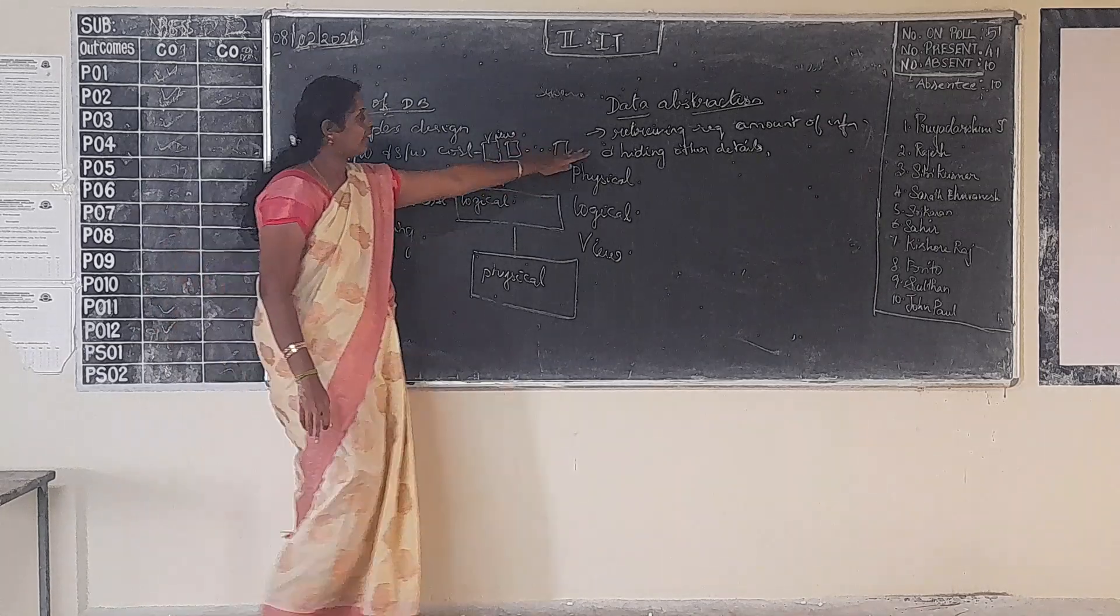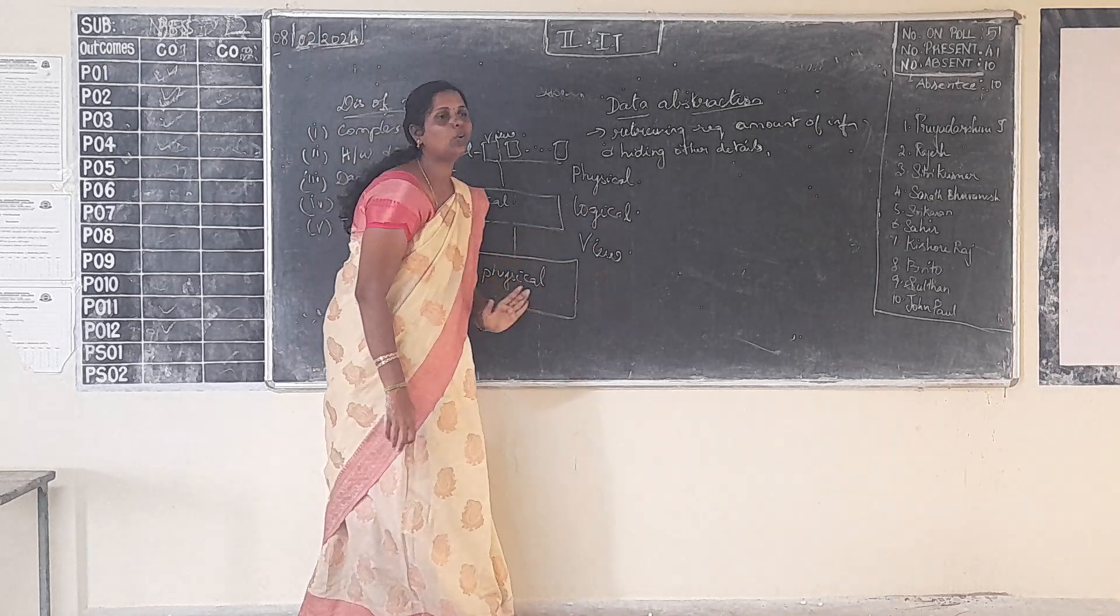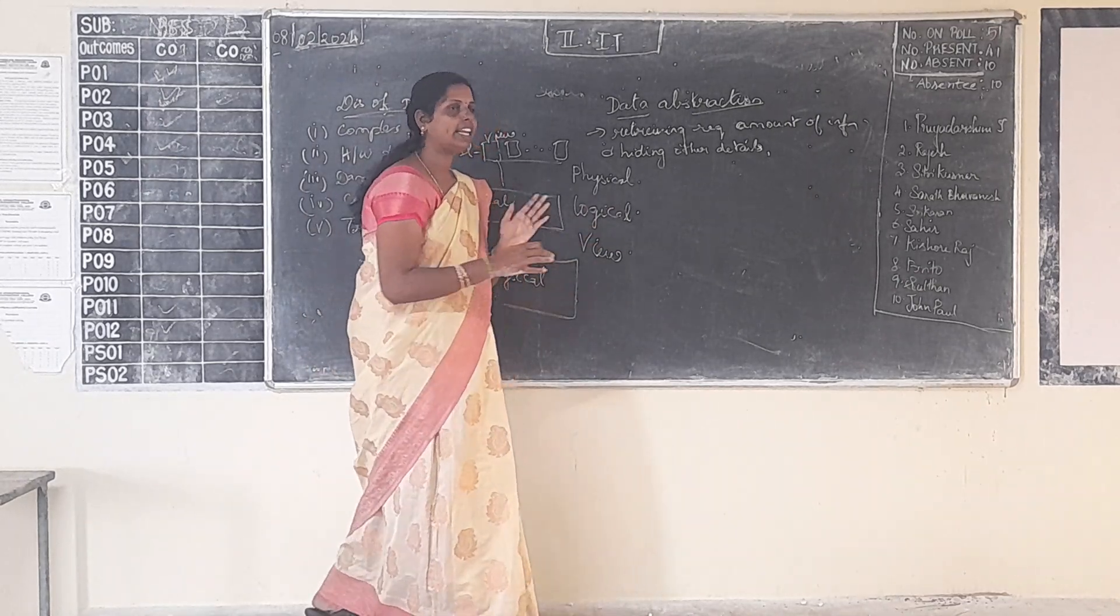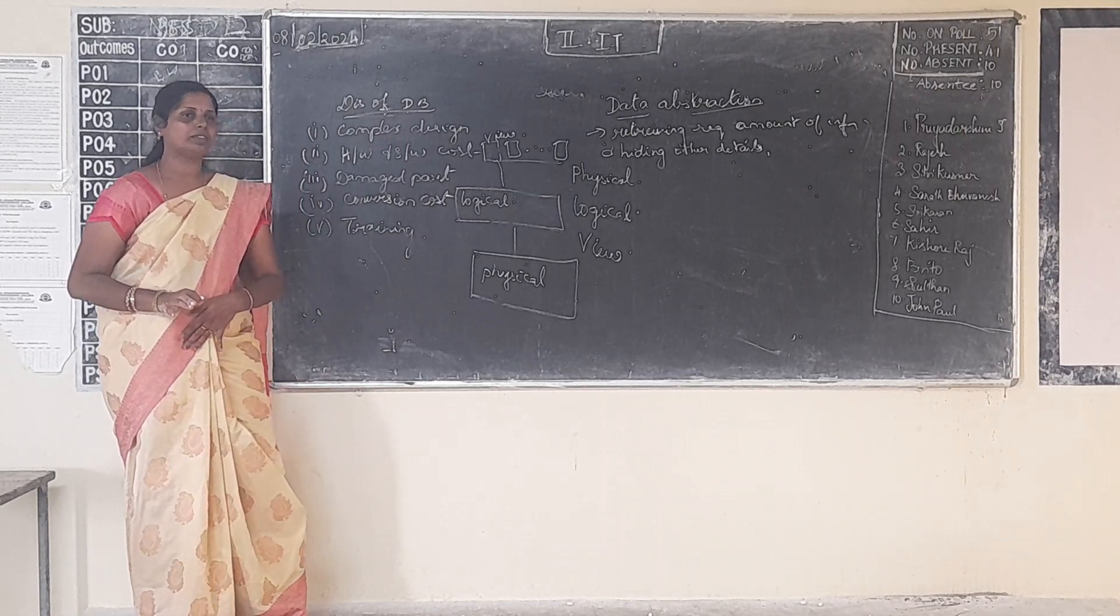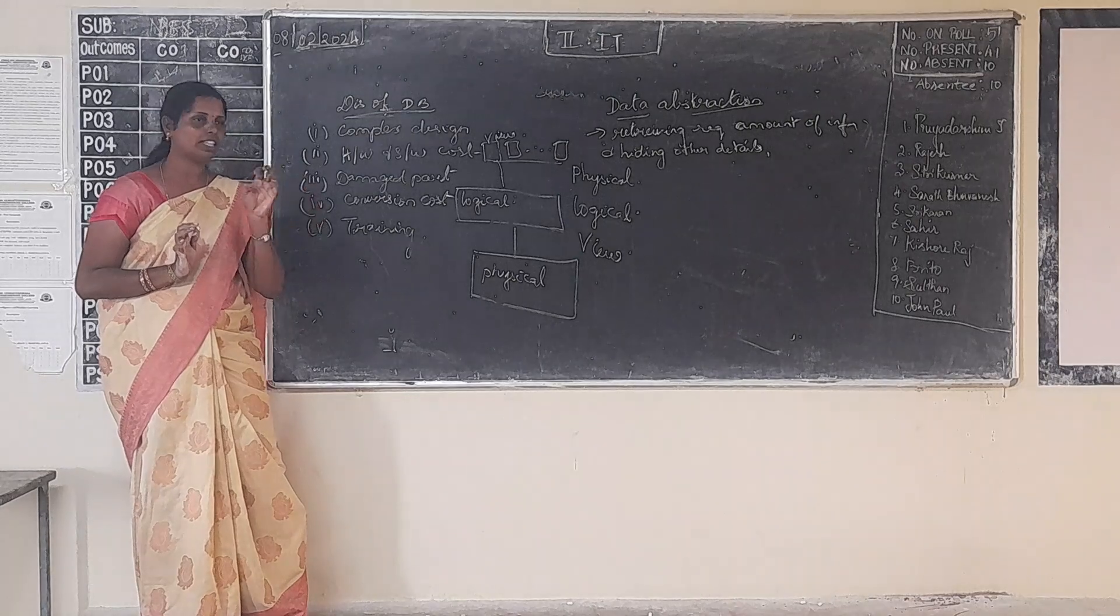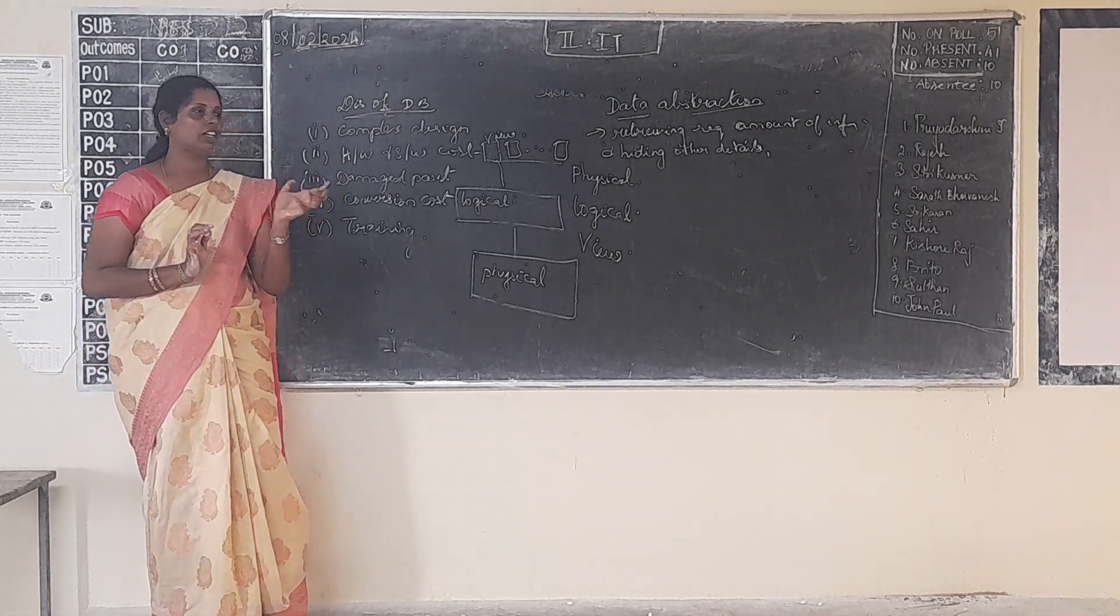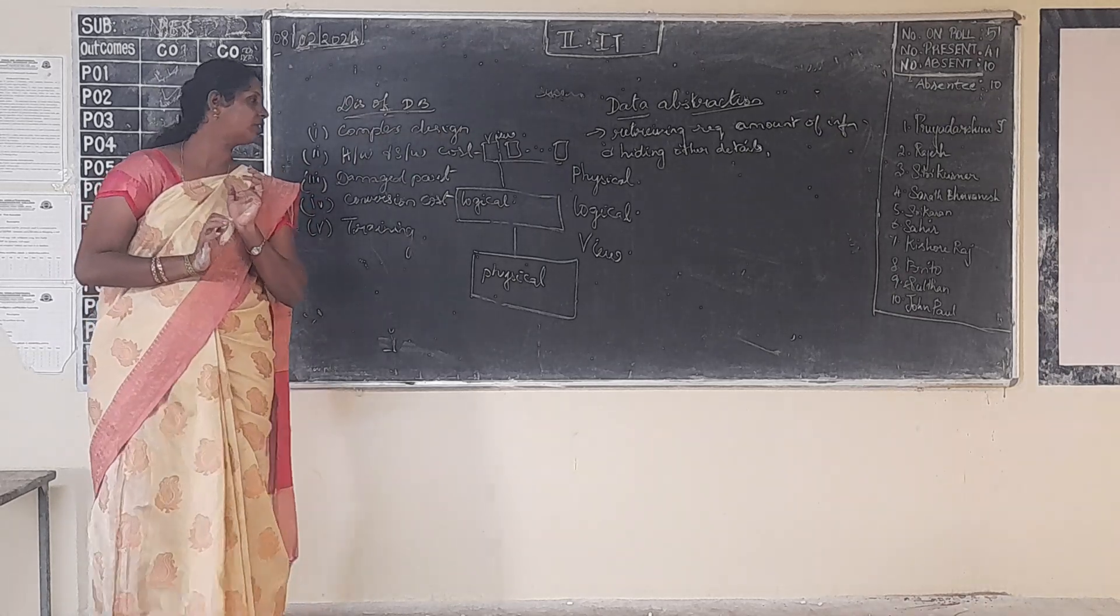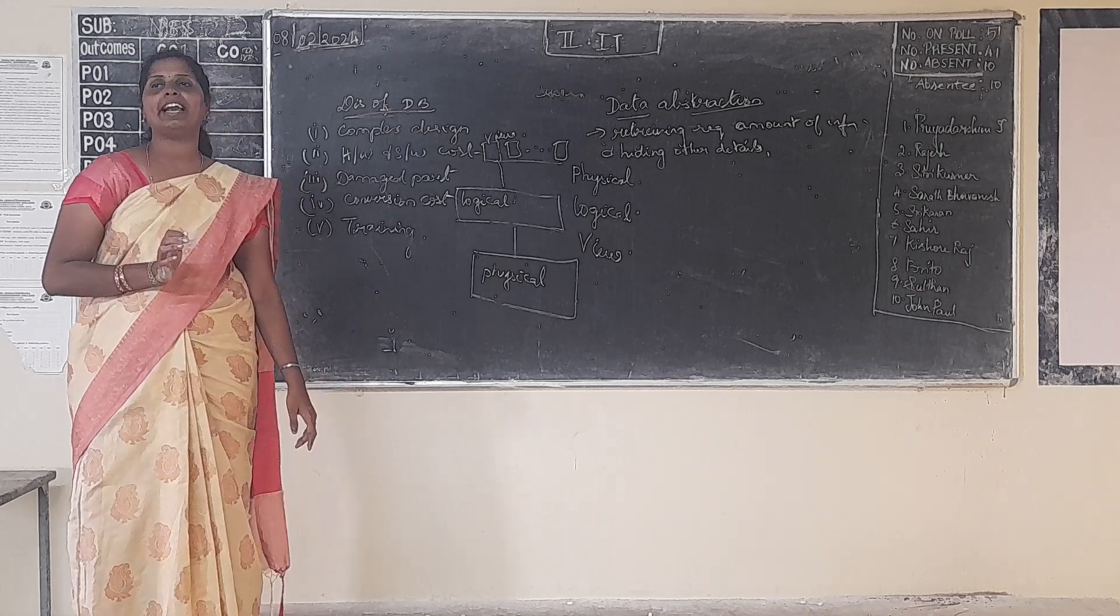Data abstraction, in that it is divided into physical, logical, and view layer. This is how the data is viewed in DBMS. Can you take a point? Now we have seen the outline of what is DBMS, how the data is being viewed. Now the next thing we are going to see, schema and instance.